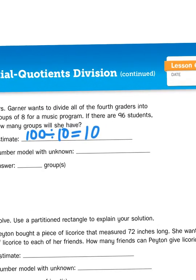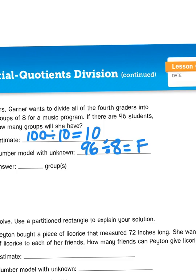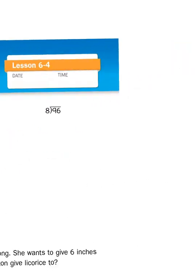Now I need to create a number model. So I'm dividing 96 into groups of 8. And that's going to give me something, F for fourth graders.